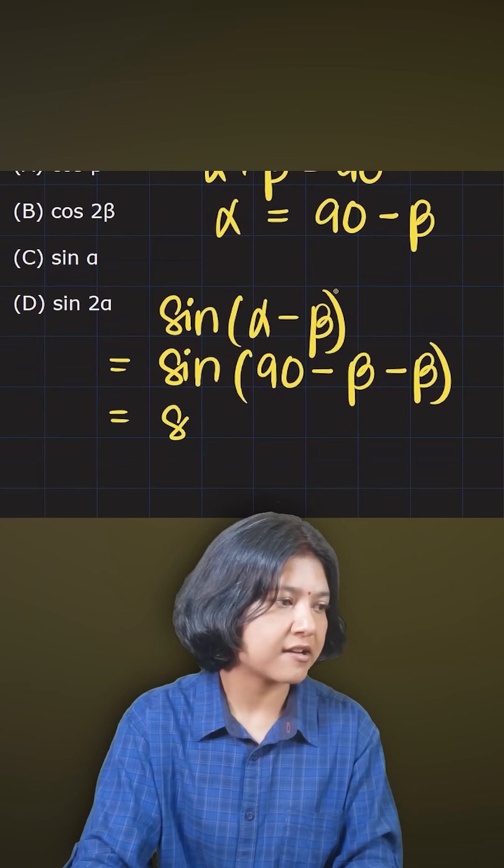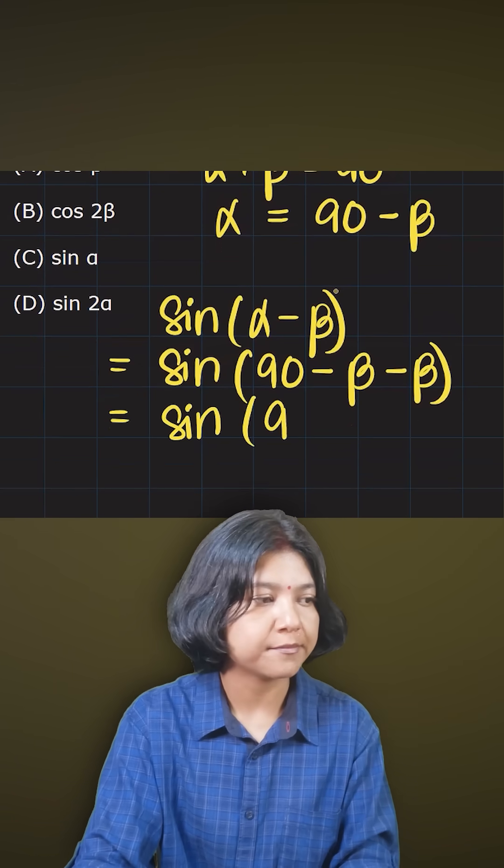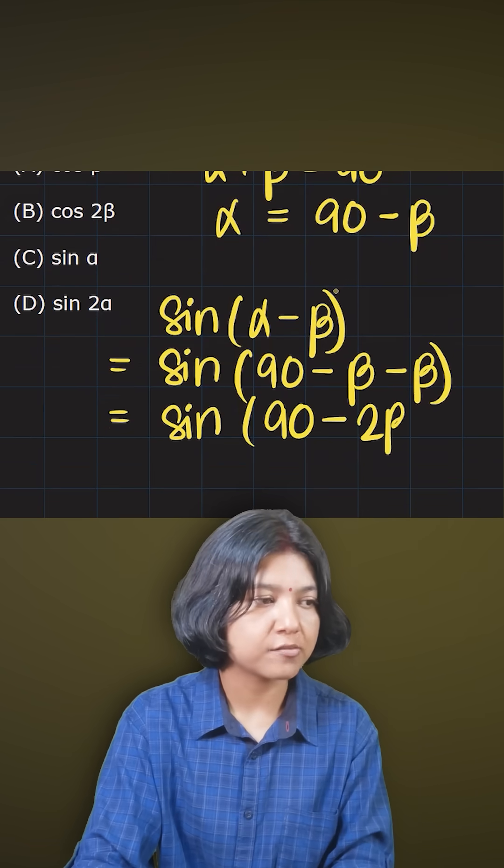Now 90 - β - β. Beta and beta are like terms, so I have to write them as a single term, giving me 90 - 2β.